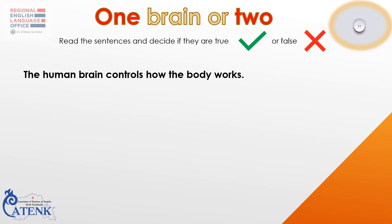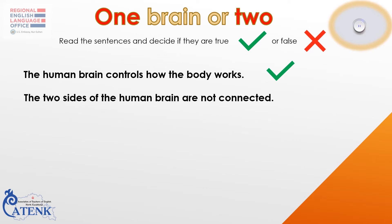You have just read the text 'One Brain or Two.' Now let's check your understanding. Read the sentences and decide if they are true or false. Sentence 1: The human brain controls how the body works. Stop the video to do the task. That is true. Sentence 2: The two sides of the human brain are not connected. What is your answer? That is false.